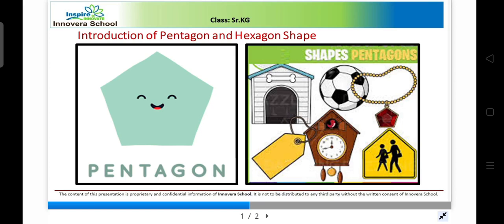Here we can see some pentagon-shaped objects: the dog house, the print on the football, a locket, a tag which we can find on new clothes, a clock, and lastly the sign board. All these objects are in pentagon shape.